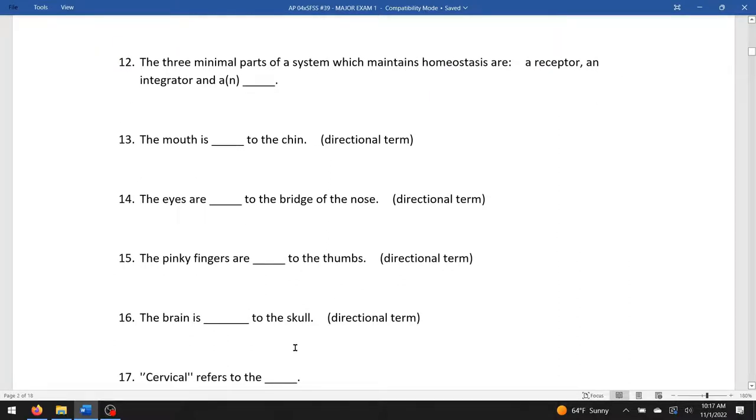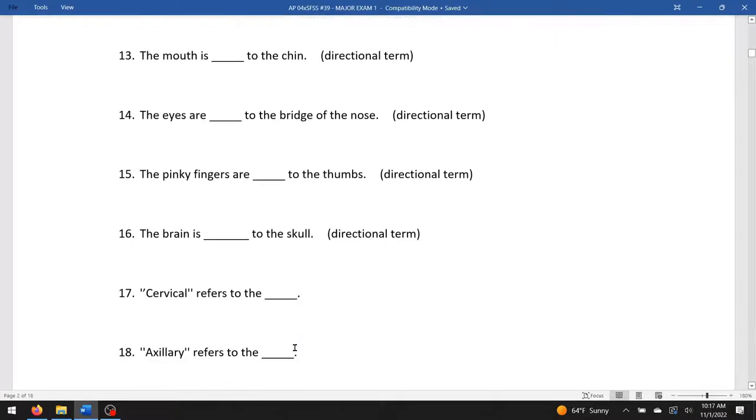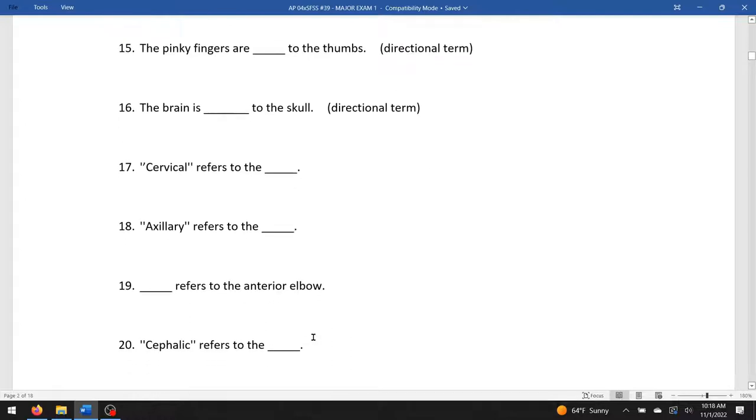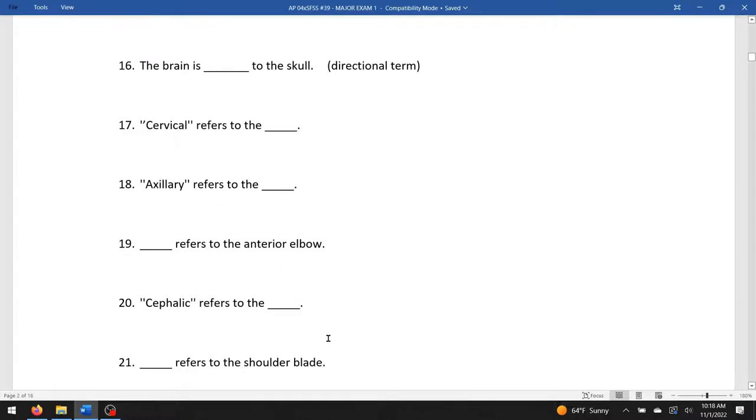Cervical. Cervical refers to a neck of something, a neck. Axillary refers to the armpits. Blank refers to the anterior elbow. The anterior elbow is called the antecubital area. Cephalic refers to the head of something. Blank refers to the shoulder blade. The blade specifically, not the part that juts out to the side. So that would be the scapula. So the term would be scapular.